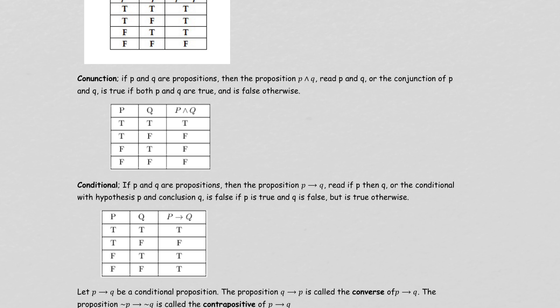Then you have the conditional. For the conditional, you have this arrow sign going from one statement to the other. When you read it, you say 'if... then.' This is going to be all true, except when you have the second statement be false.